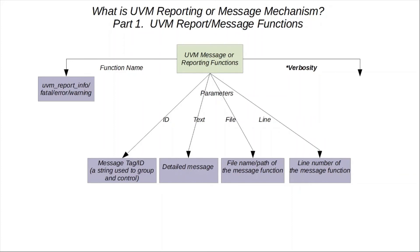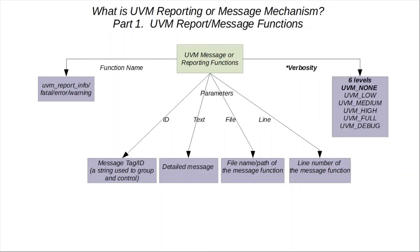The other parameter is the verbosity level, which is of type enum. It's mainly required for UVM info. There are six levels: UVM none, low, medium, high, full, and debug — with UVM none being the highest priority and UVM debug being the lowest. By default the verbosity level of UVM info is UVM medium, which means all UVM info messages with a verbosity level set to medium or higher will be displayed in the log file. That means only messages set to UVM none, low, and medium — which are all higher priority than UVM high — will get printed into the log file.